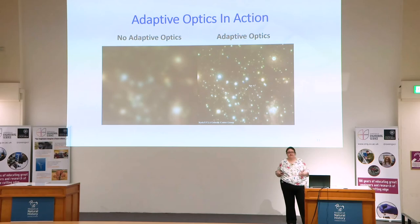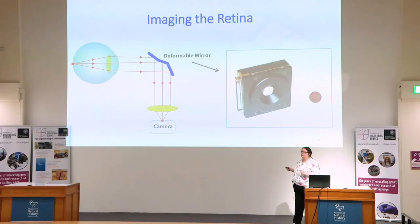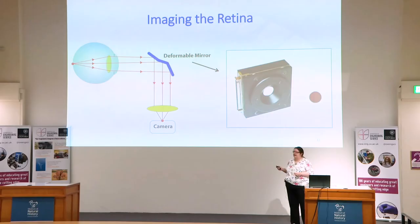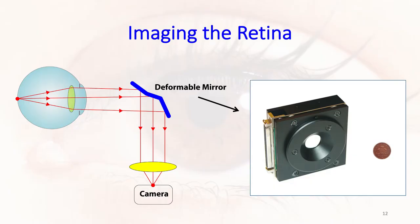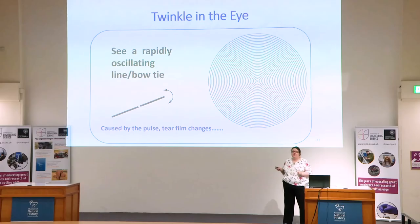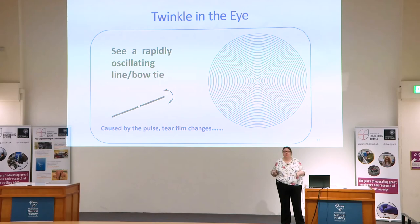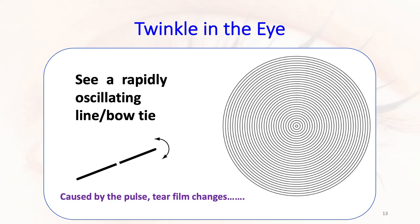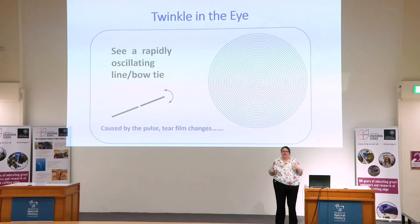The recent Nobel Prize winner Andrea Ghez actually used adaptive optics when she was detecting the black hole. When imaging the retina, we do exactly the same thing — we put this deformable or flexible mirror between the eye and your camera. Because this mirror adapts or changes shape, this is why it's called adaptive optics. The mirror has lots of little magnets behind it and works on electromagnetic attraction, constantly changing shape. In the eye, just as in astronomy, the rays are changing direction constantly — a bow-tie pattern rapidly rotating — because the optics of your eye are changing shape rapidly.